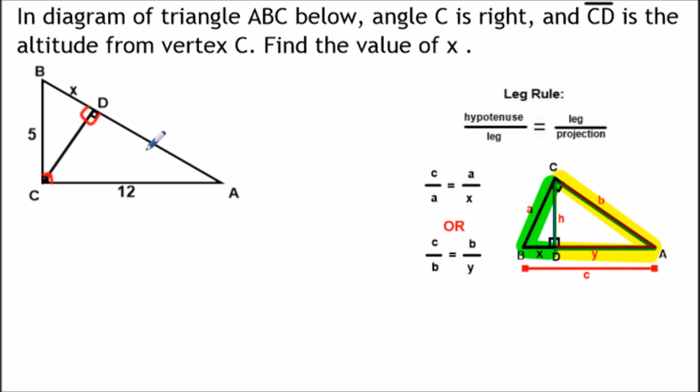In this situation we have the length of segment BC and CA, which are the legs of the big right triangle. So we could use those two values to find the hypotenuse of the big right triangle. We're going to find the length of the entire segment BA.